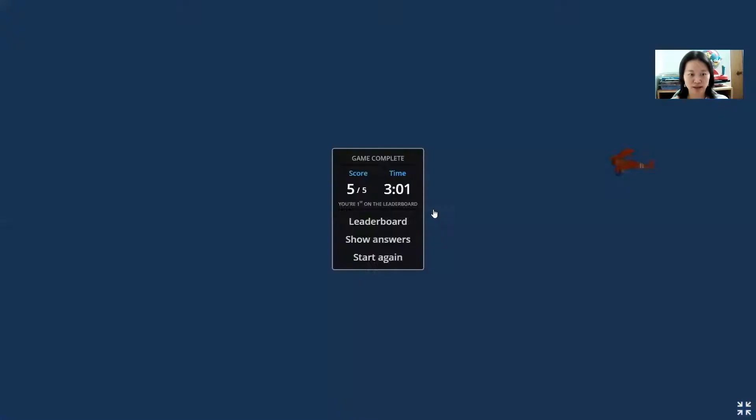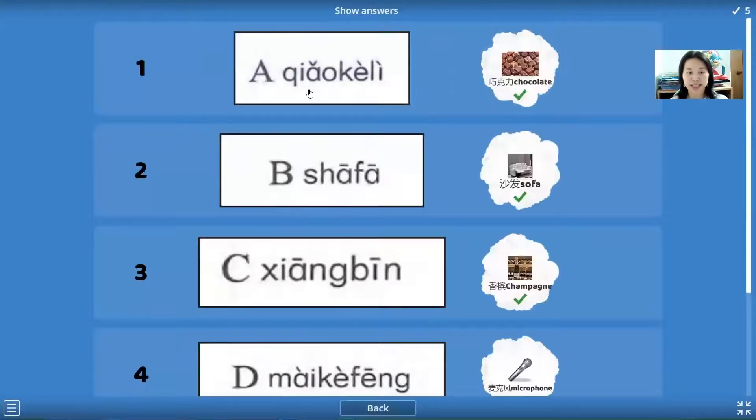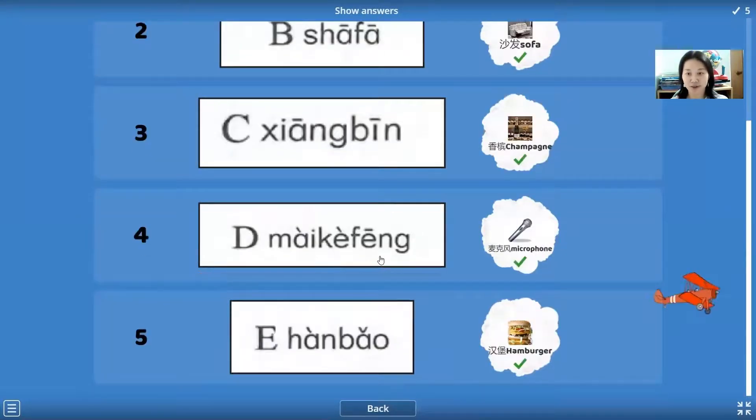That's we review about it. And today we have this new words. First one is qiaokeli, qiaokeli. Second we say shafa, shafa. Third one we say xiangbin, xiangbin. Next one we say maikefeng, maikefeng. The last one we say hanbao, hanbao. I will share this game link below. Please check about it and you can practice it by yourself. And don't forget to subscribe my Chinese channel. See you soon.